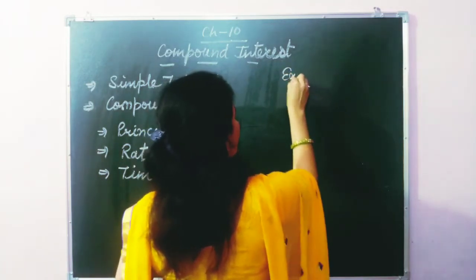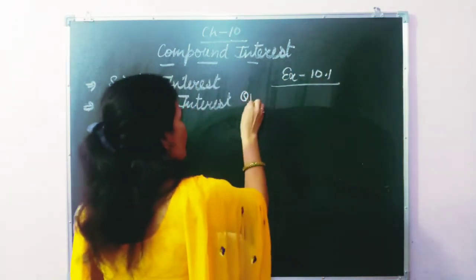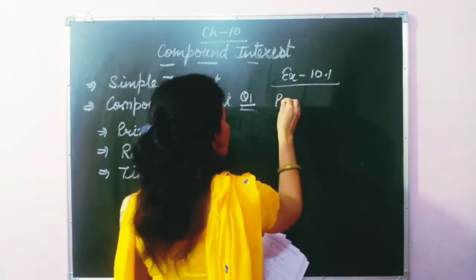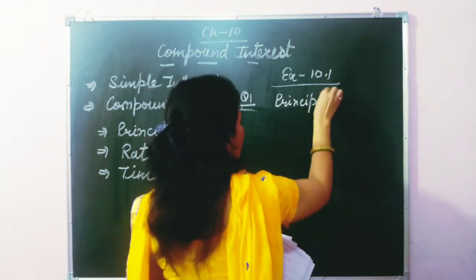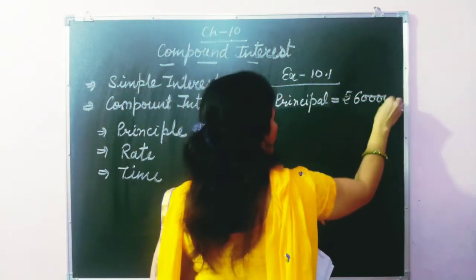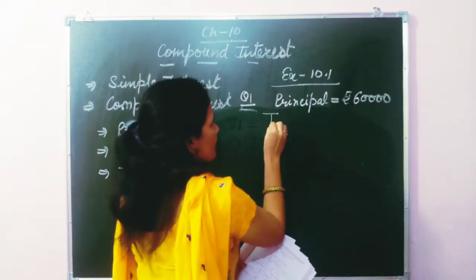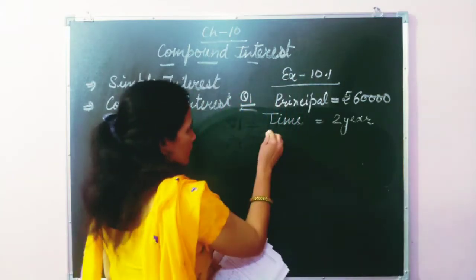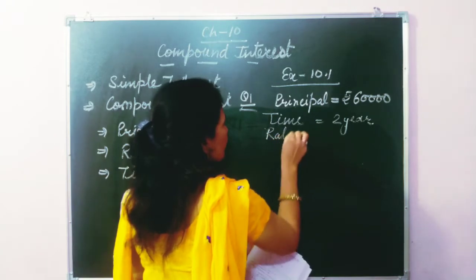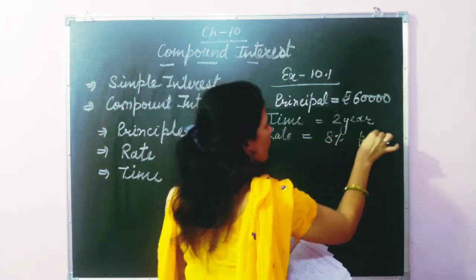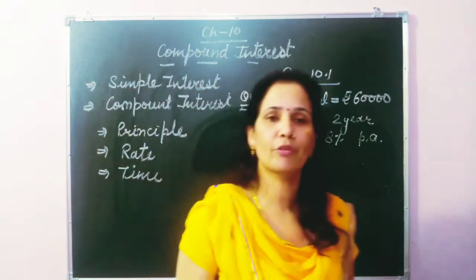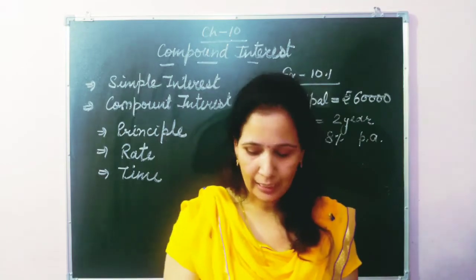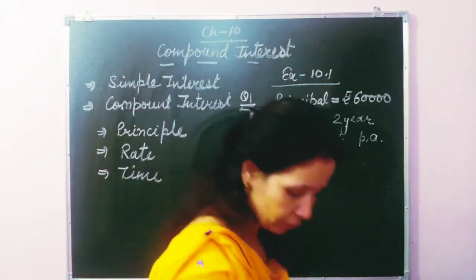Exercise 10.1, Question 1. In this question they have given: Mrs. Sharma deposits ₹60,000 in a bank for two years. So the Principal is ₹60,000, Time duration T is 2 years, and the rate of interest is 8% per annum. We have to find out what amount she will receive at the end of two years with interest compounded annually.